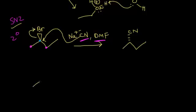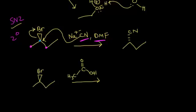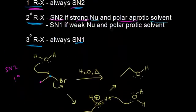Now let's use the same secondary alkyl halide but react it with acetic acid. Since it's the same alkyl halide, it's still secondary. This time the nucleophile is the oxygen of acetic acid — it has lone pairs of electrons but doesn't have a −1 formal charge, so it's a relatively weak nucleophile. Acetic acid is also a protic solvent. Going back to the chart: polar protic solvent plus relatively weak nucleophile means we proceed via an SN1 mechanism.